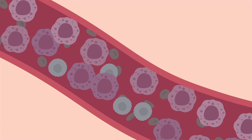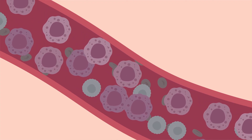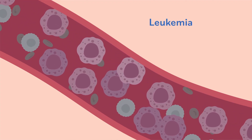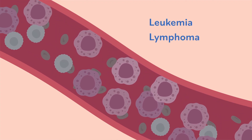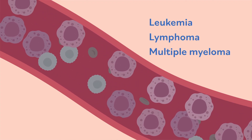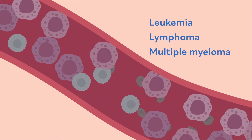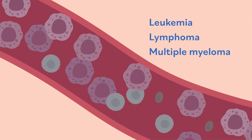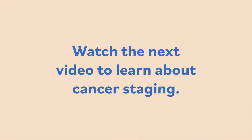Examples of blood cancers are leukemia, lymphoma, and multiple myeloma. Watch the next video to learn about cancer staging.